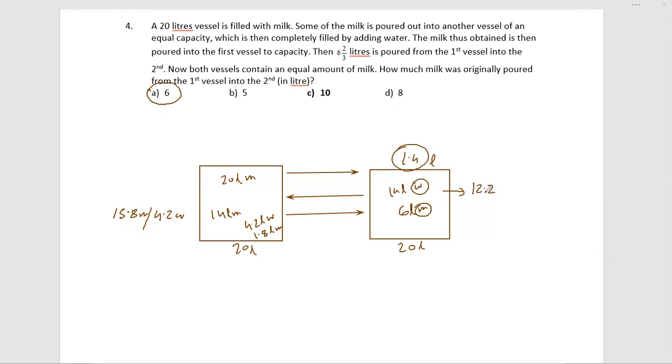2 point... so 11.2 liters of water. But we want equal amount of milk, means 10, 10. So if there are 10 milk, there should be 10 water.